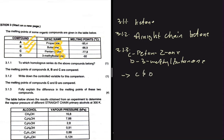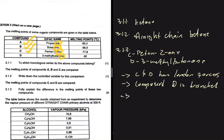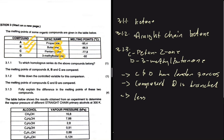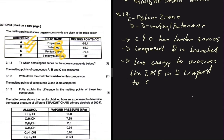Since both C and D are ketones, they both have London forces as their intermolecular forces. They also have the same molecular formula. However, compound D has a branch, unlike compound C. Because compound D is branched, less energy is required to overcome the intermolecular forces in D compared to C. As a consequence, compound D will have a lower melting point.